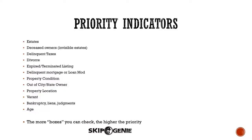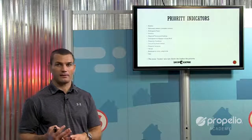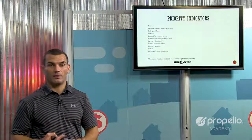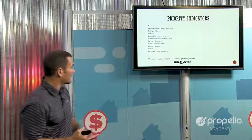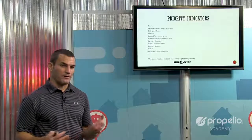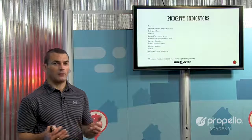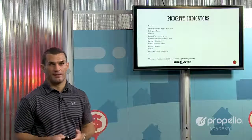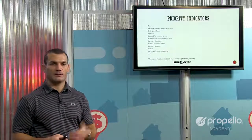Delinquent taxes are probably one of the more common types of indicators, especially in a state like Texas where property taxes are such a big deal. Divorce is another one that can lead to financial distress with the husband and wife going through the process. Expired and terminated listings are another indicator. Delinquent mortgages and loan modifications always signify financial distress. Property condition can also be a priority indicator — not all vacant houses are the same. Is the property well maintained, or is it boarded up with a blue tarp over the roof, obviously run down and abandoned?